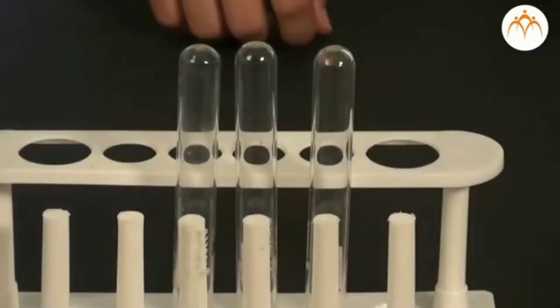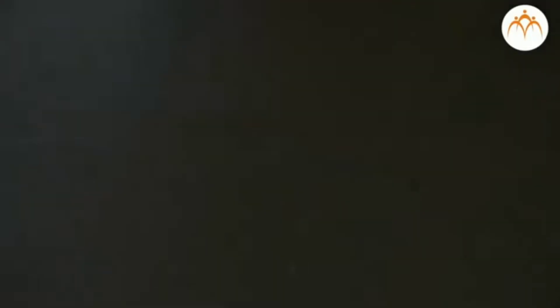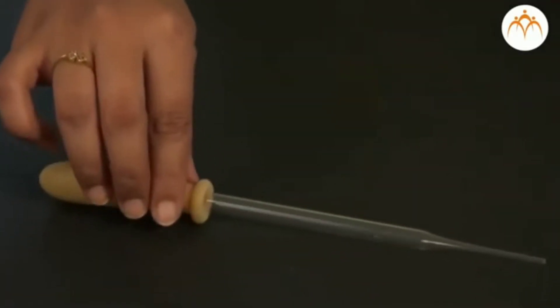In this experiment, we will identify chloride, bromide, and iodide ions from the given salts. We need apparatus like test tubes, stand, droppers, etc. We also need compound silver nitrate.